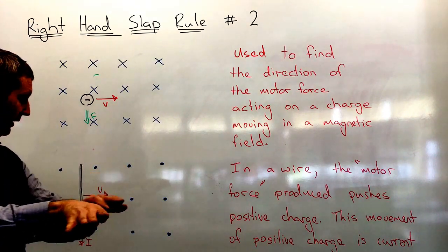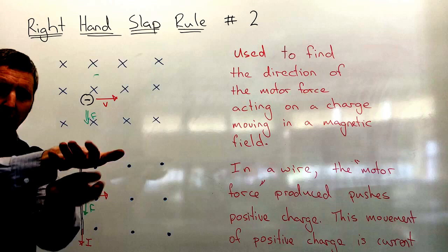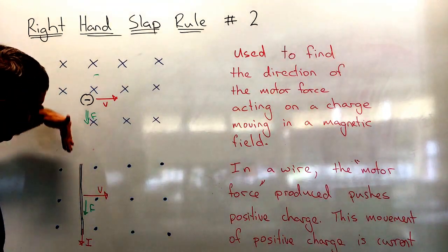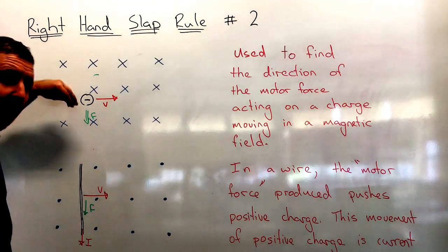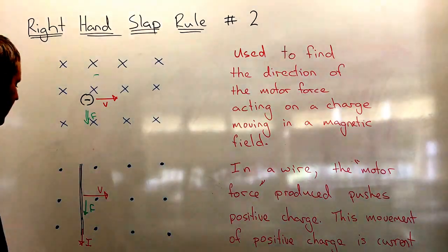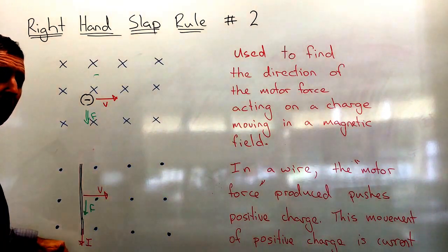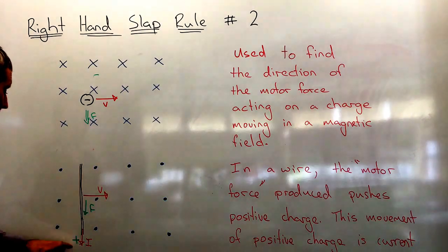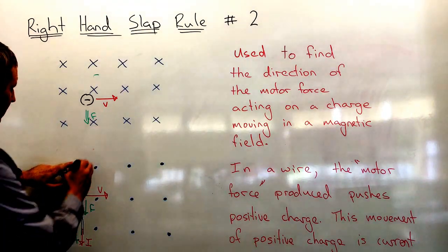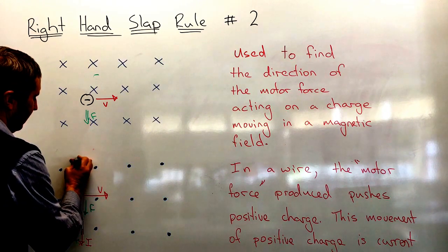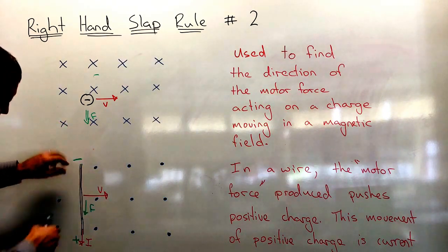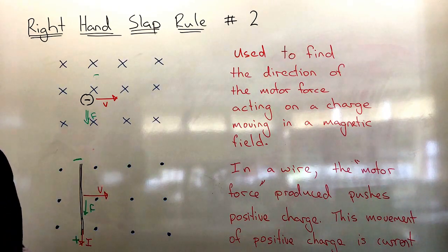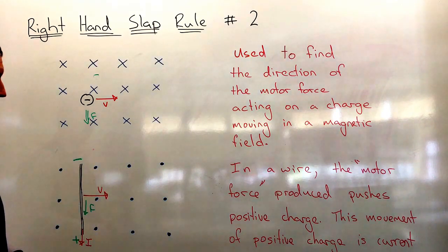With fingers coming out of the page and thumb in the direction of velocity, positive charge is forced down the wire. If positive charge goes down the wire, then current is traveling down the wire. This means positive charge accumulates at one end, making it positive, and negative charge is left at the other end, making it negative. So this wire develops a positive and negative charge on either end, producing a voltage or potential difference.